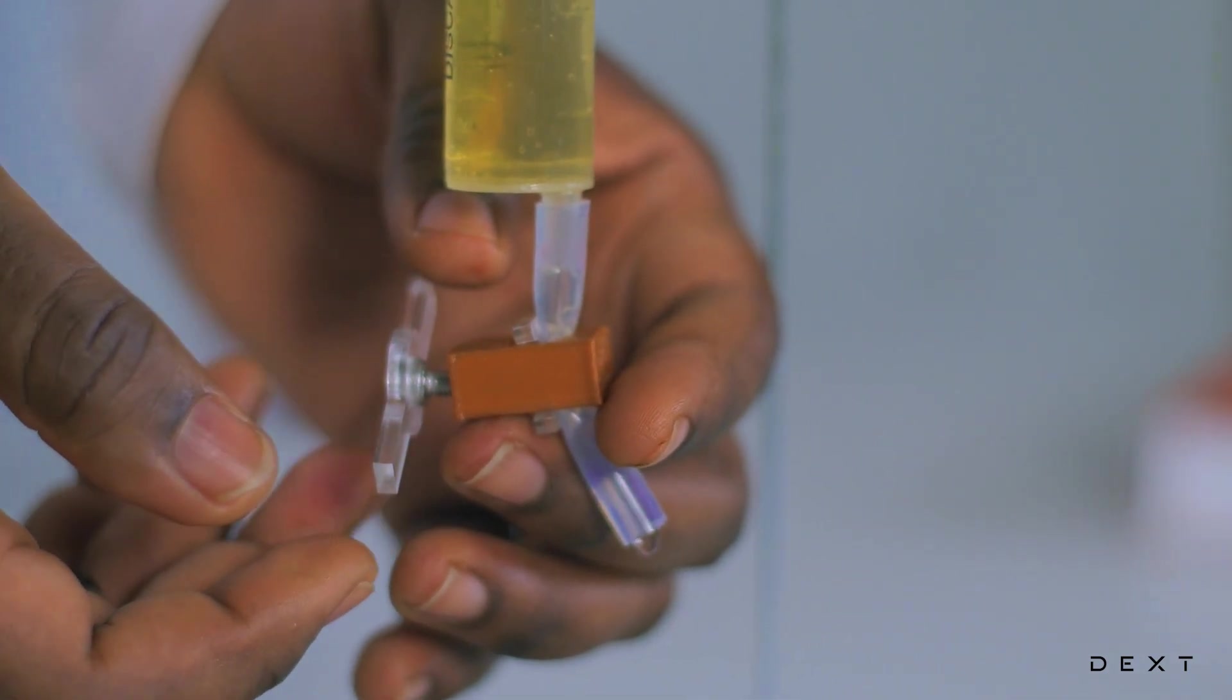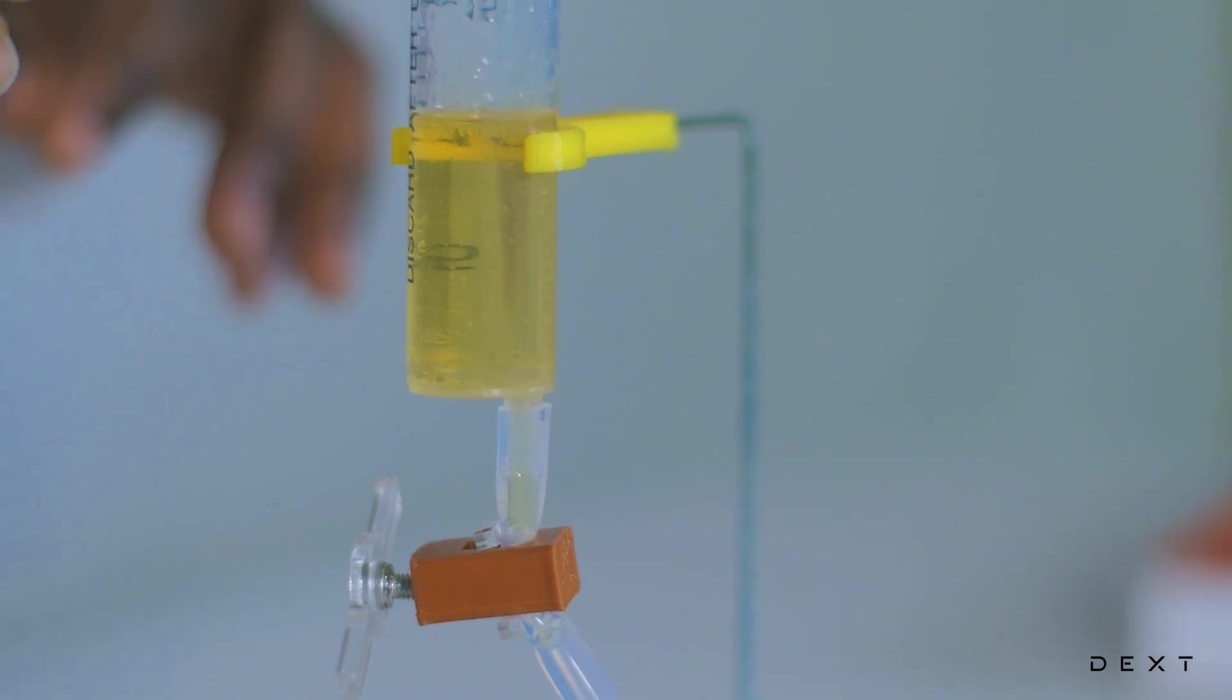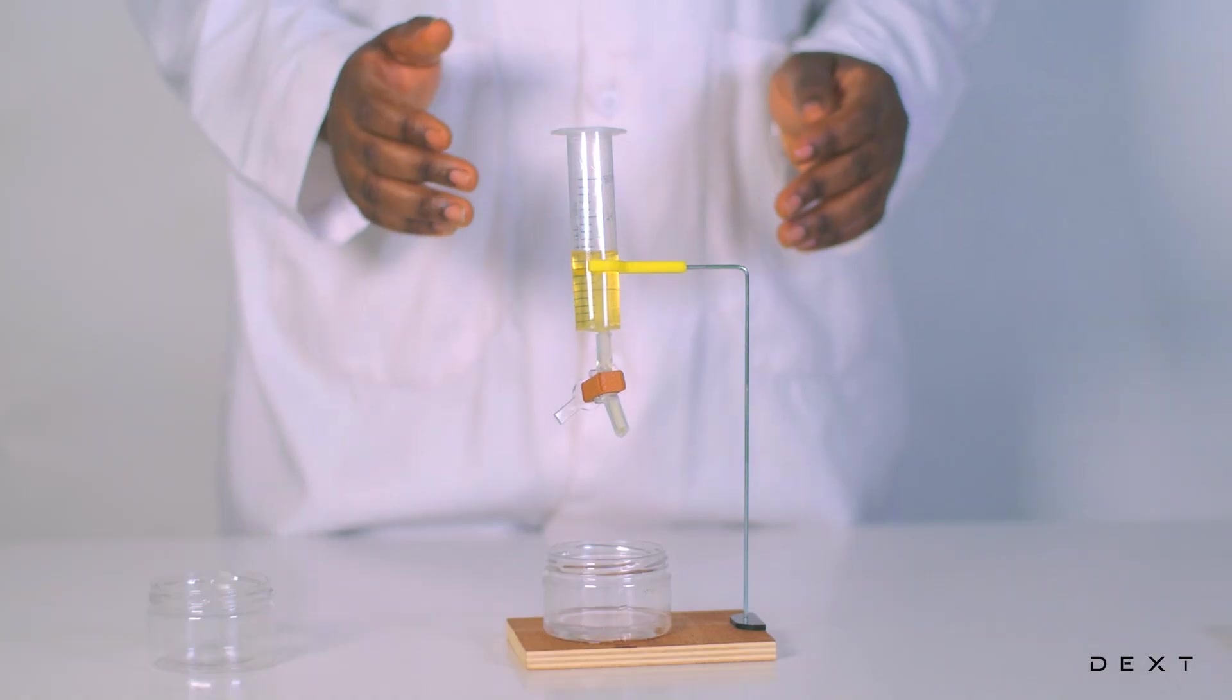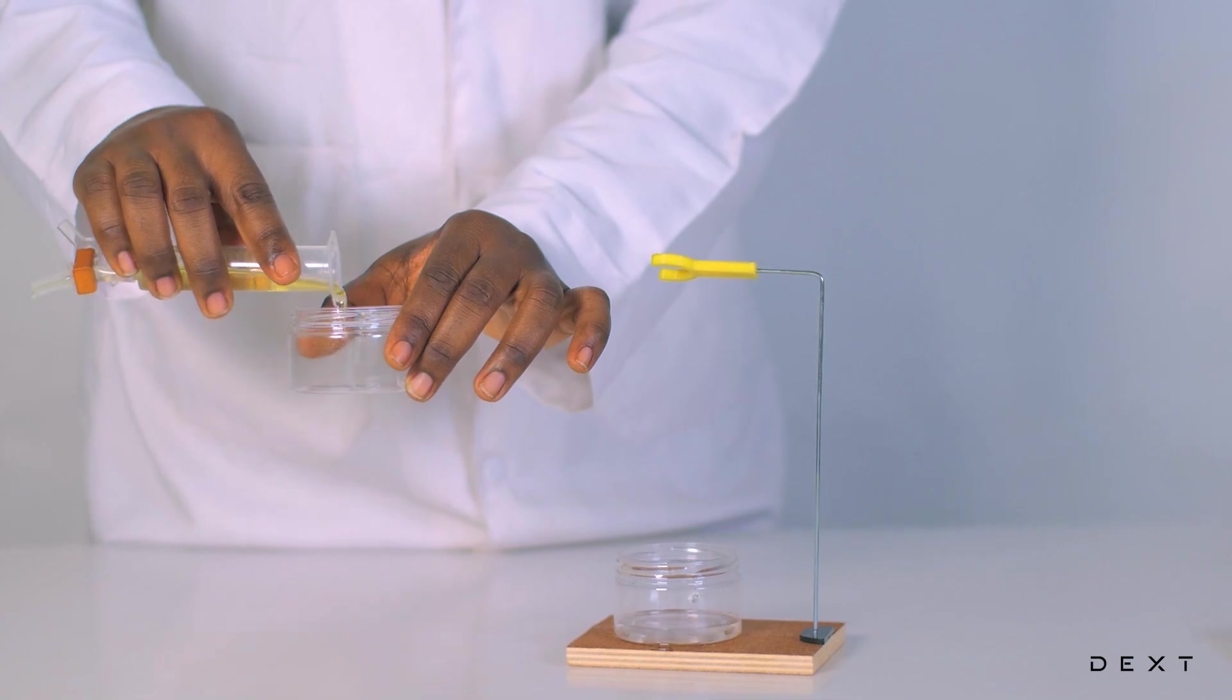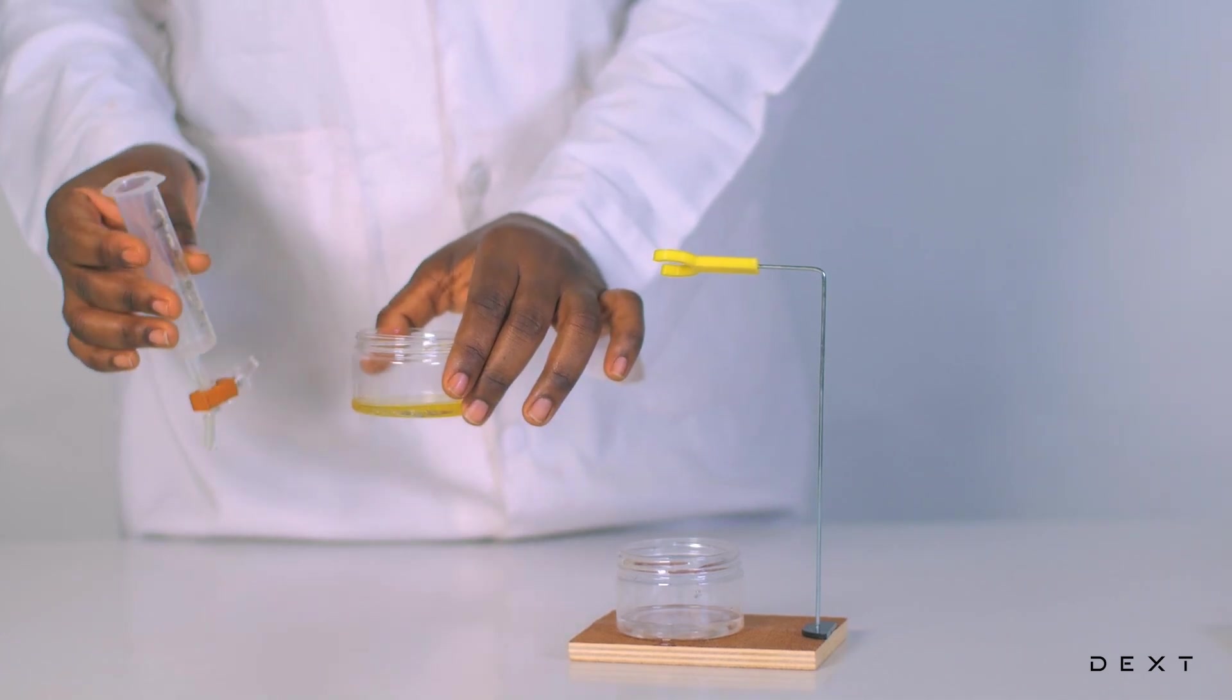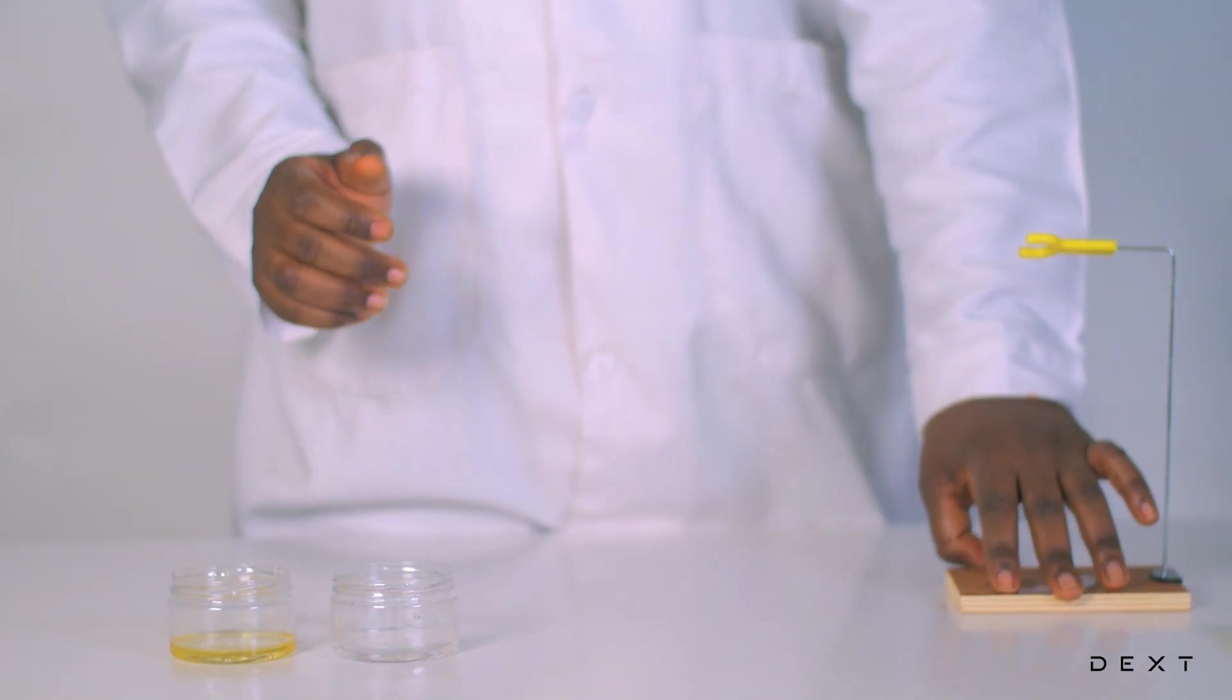So now we've been able to separate the two liquids successfully. As you can see, there's no trace of oil in the water. Now, we'll pour out the oil from the separating funnel. So we'll take it out and we'll pour it into an empty container like this. So you can see that the water and the oil have been separated completely.